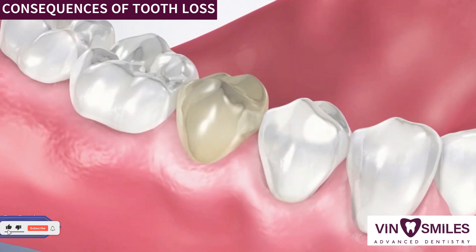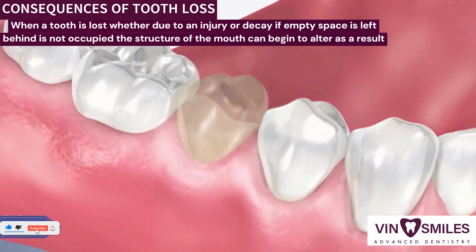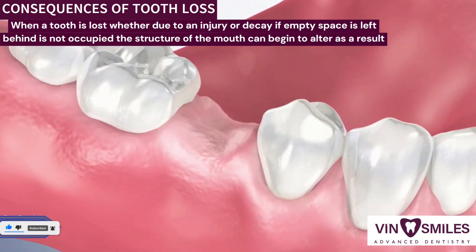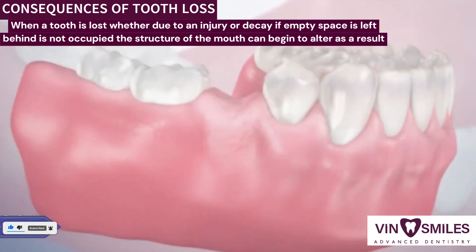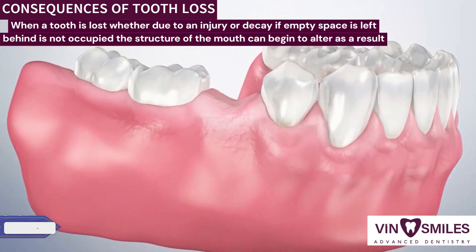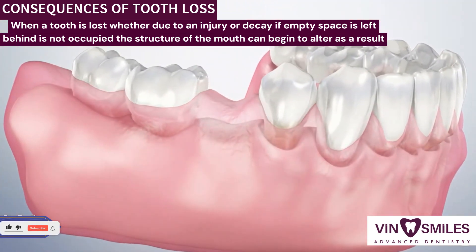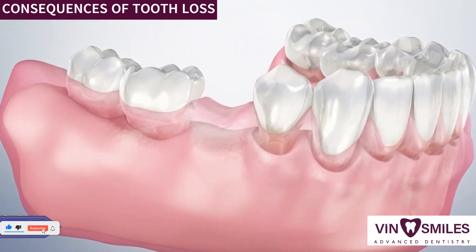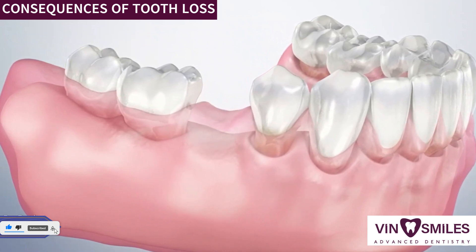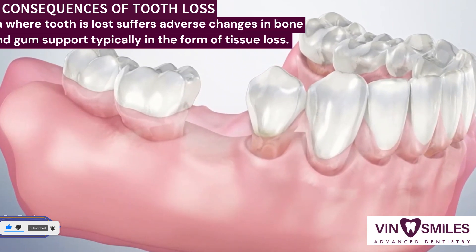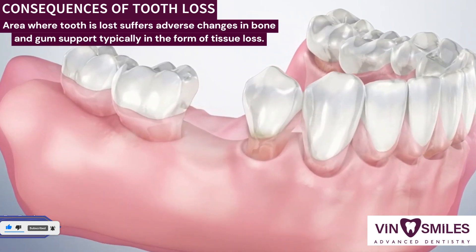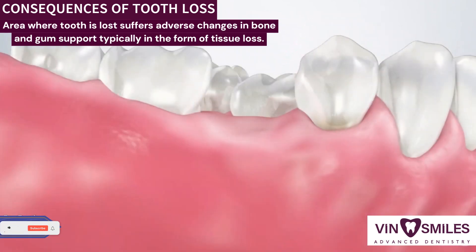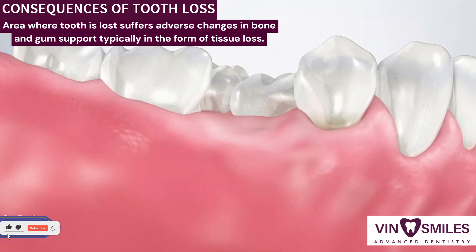When a tooth is lost, whether due to an injury or decay, if the empty space left behind is not occupied, the structure of the mouth can begin to alter as a result. The immediate area where the tooth is lost suffers adverse changes in the bone and gum support, typically in the form of tissue loss.